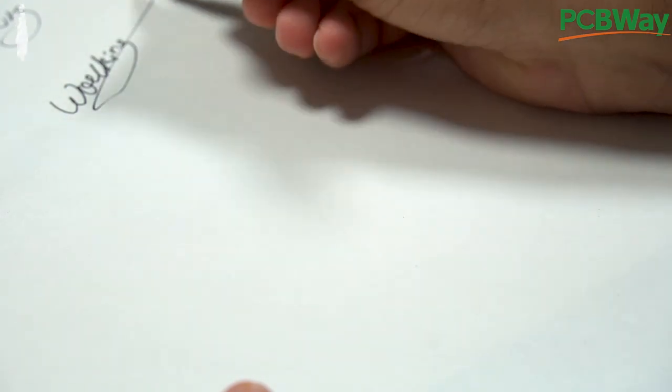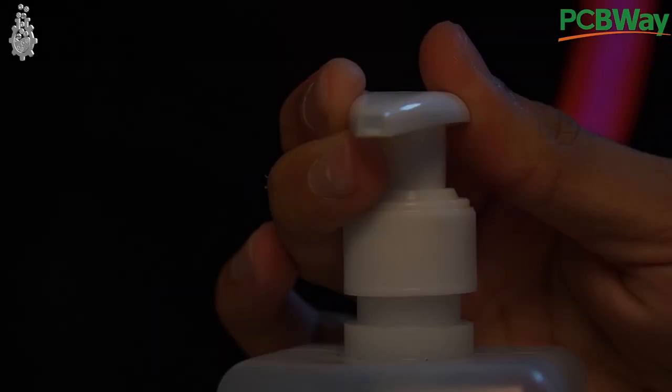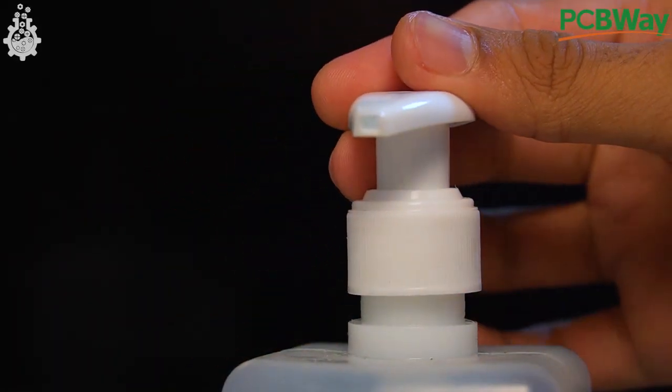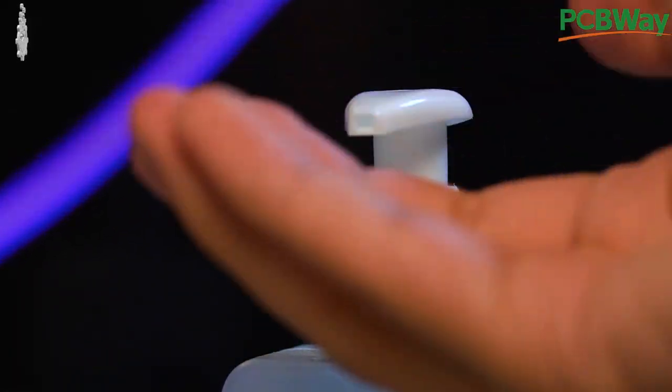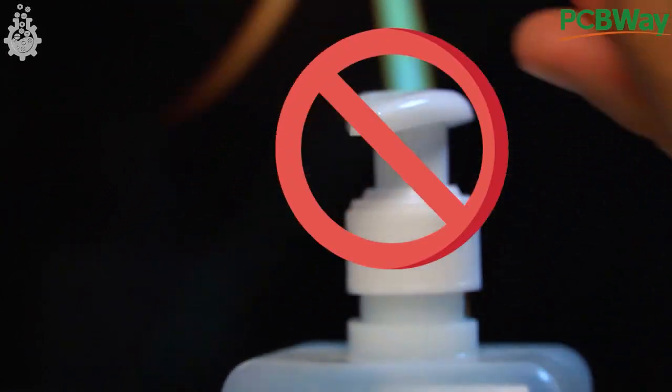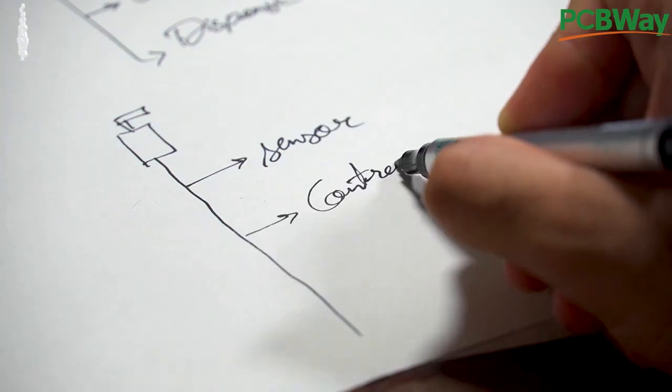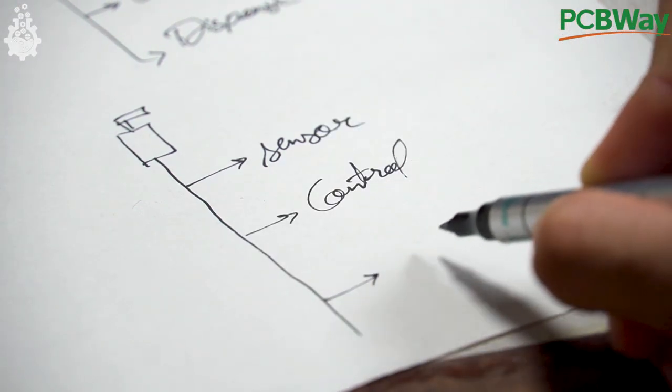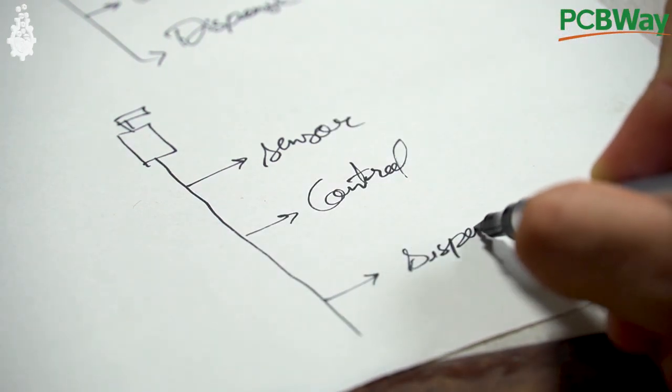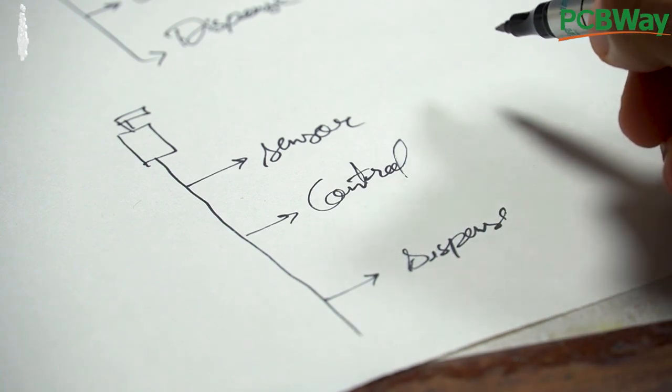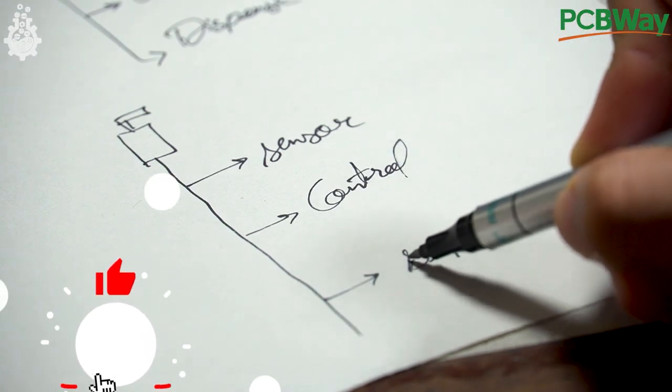First, let's discuss the working of this project and then we will discuss specific components. The basic goal of this project is to dispense hand rub or hand sanitizer without touching the bottle, for which we will need a sensor, a device that can understand sensor data, and translate it to something that can be used to mechanically dispense the alcohol hand rub or hand sanitizer.